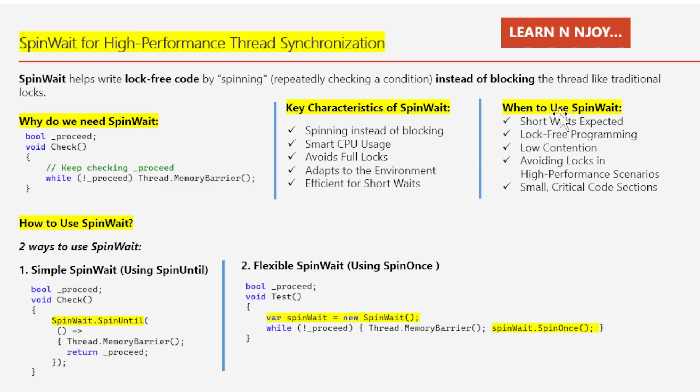Now let's talk about when to use SpinWait. Number one: short waits expected — use SpinWait when the condition you're waiting for will be ready quickly, within a few moments. It checks repeatedly and is faster than putting the thread to sleep and waking it up. For example, when a thread is waiting for a quick update from another thread, like a flag change in a high-performance game loop. Number two: lock-free programming — SpinWait is useful in lock-free algorithms where threads don't block each other with locks; instead, they keep retrying until they succeed, which can be faster when contention is low.